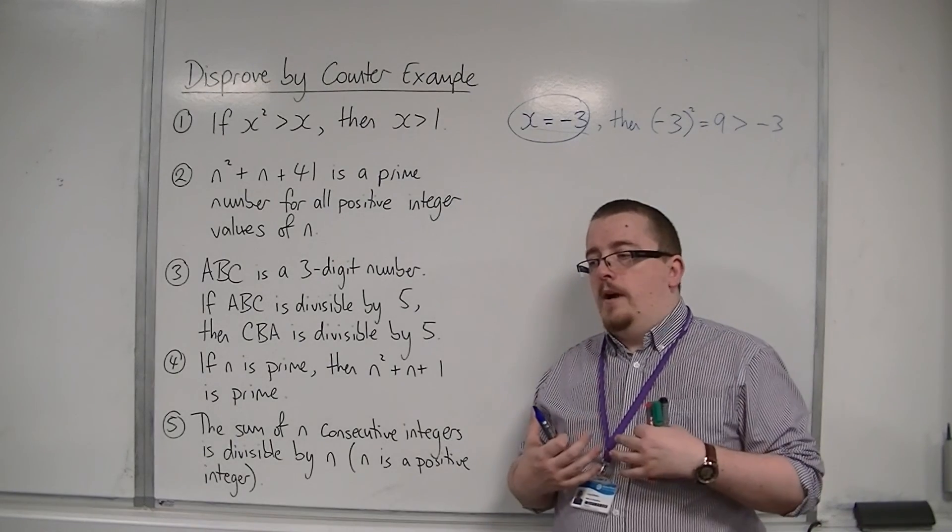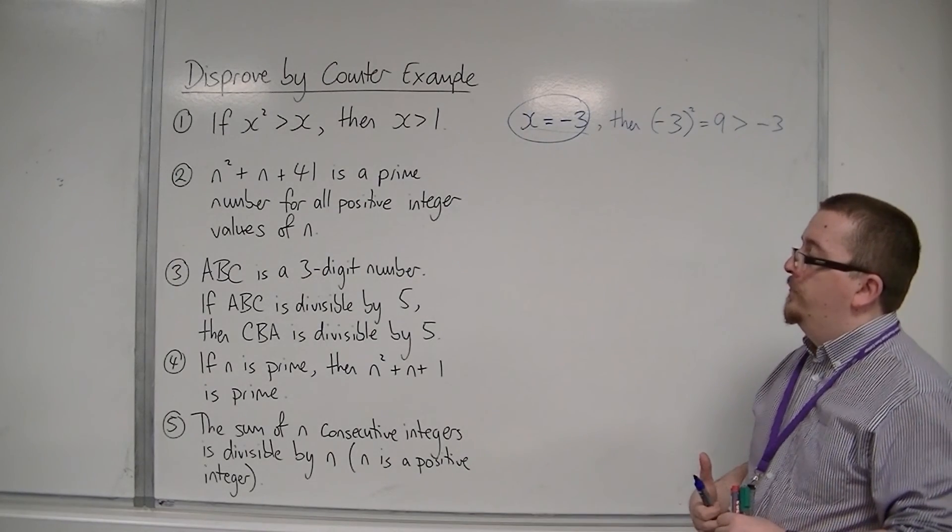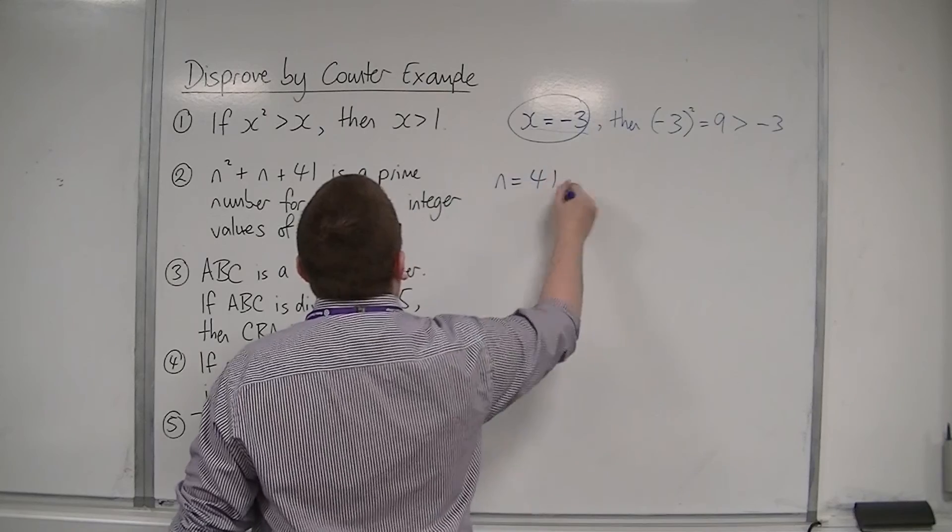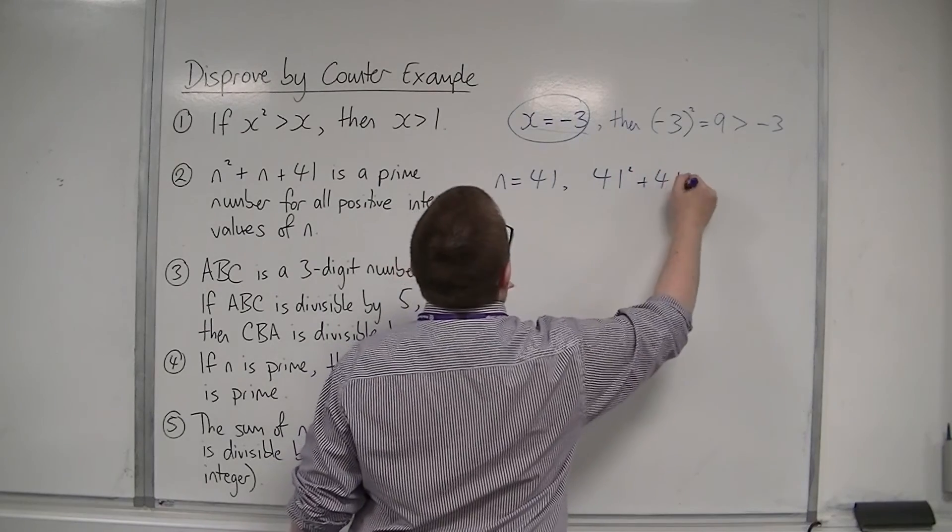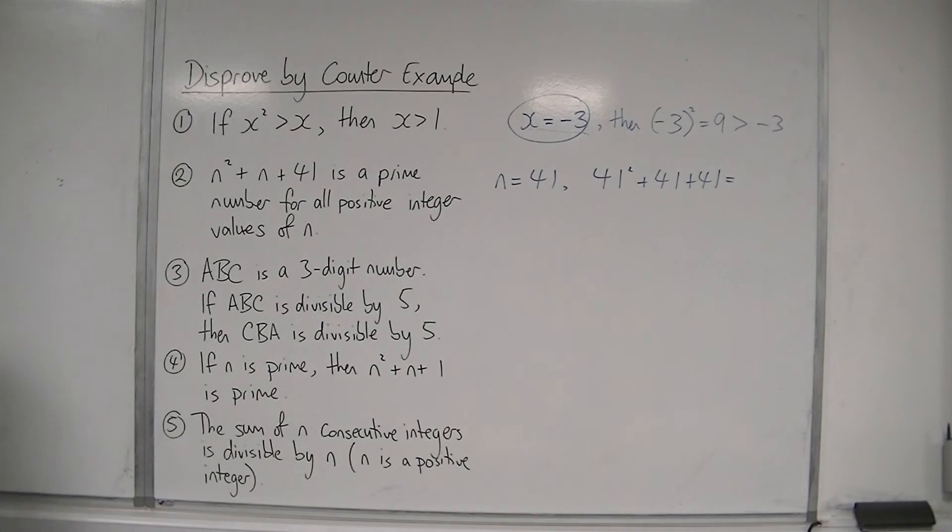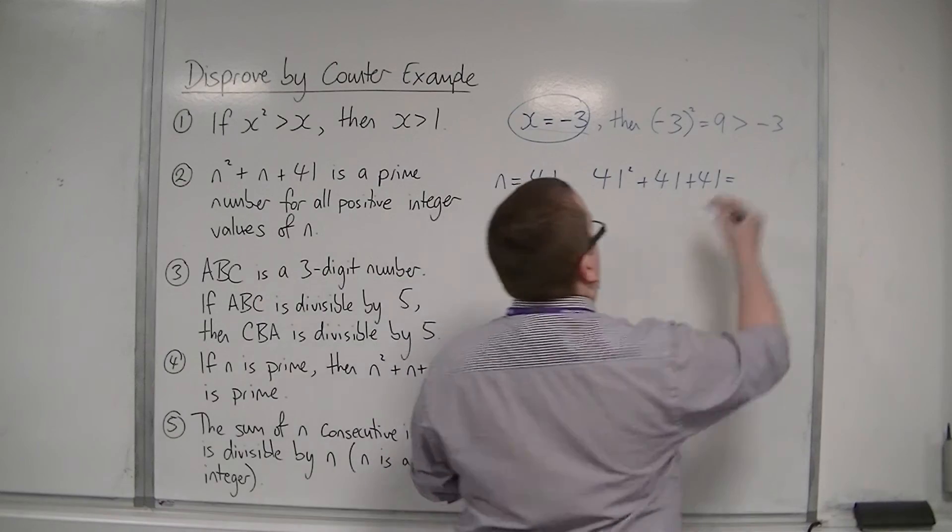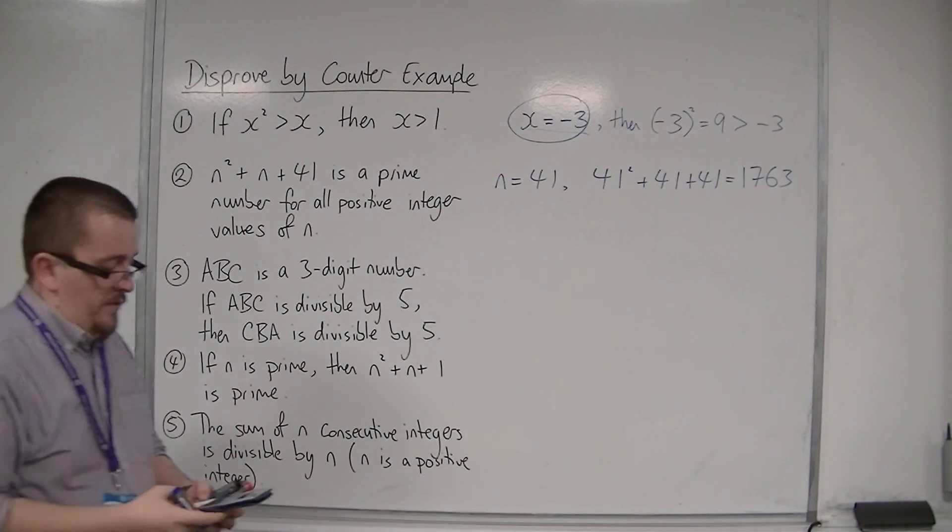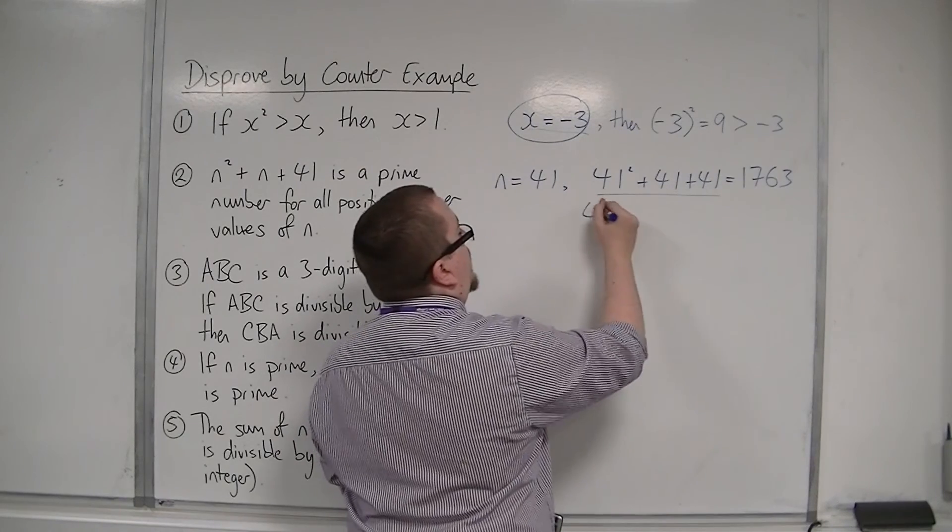But sometimes it's also quite easy to spot whether this is going to be true or not. Because if I substitute in n is 41, for example, then 41 squared plus 41 plus 41. So we work that out. 41 squared plus 41 plus 41, that's 1,763, which is divisible by 41.